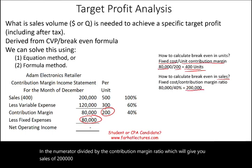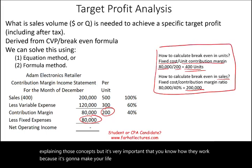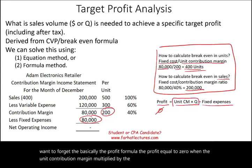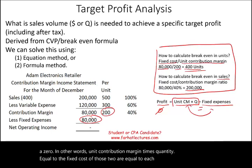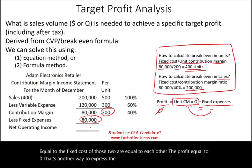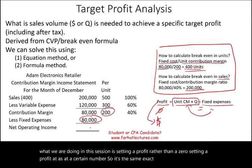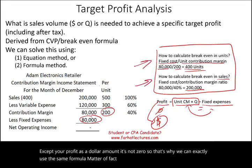Now, the key formula to remember is that profit equals the unit contribution margin times quantity minus fixed cost, which equals zero at break-even. All we are doing in this session is setting a profit at a certain number rather than zero — the same exact concept, except your profit is a dollar amount, not zero. We can use both the equation method and the formula method to compute this.